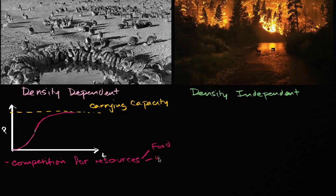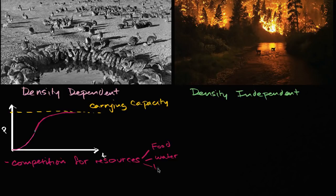One type of resource could be food; another could be water — there might only be so much water to support organisms of a certain kind. And we often talk about animals, but it could be plants or bacteria. If we're talking about plants, we could think about light. What limits having an infinite number of plants in a certain area? Water will limit, the nutrients in the soil will limit, but also access to light. You've seen pictures of a dense canopy in a rainforest, and plants are trying to seek out whatever gap in the canopy they can find.